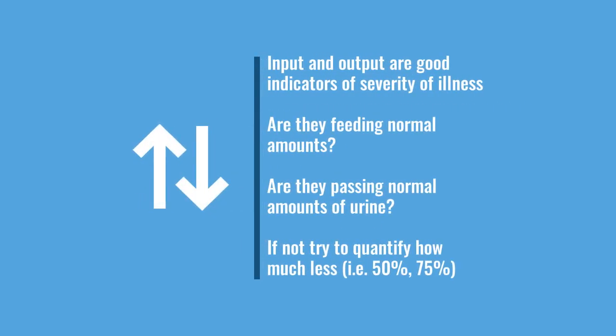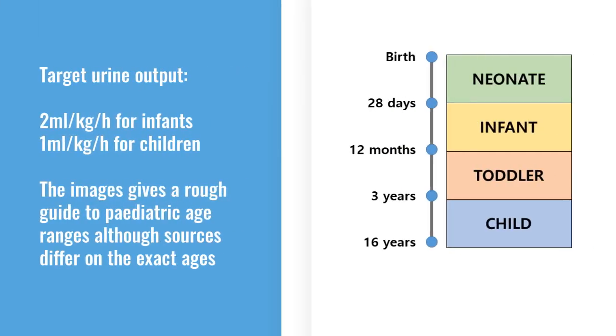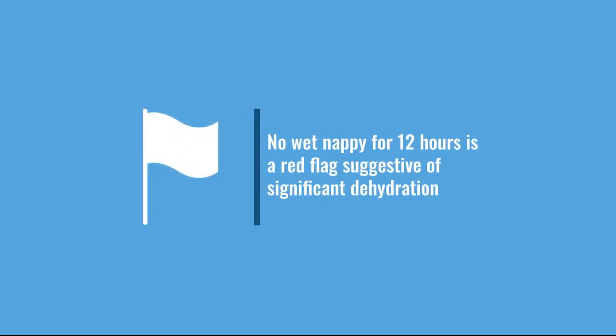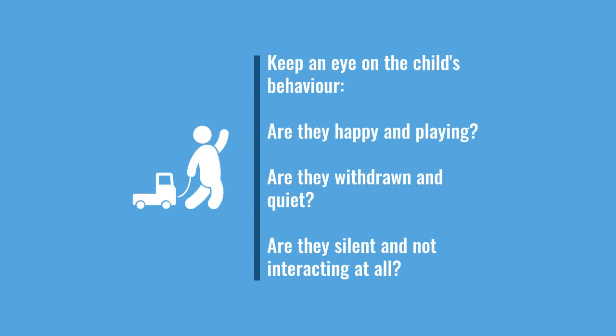It's really important to look at their input and output — are they feeding and are they toileting? For example, if they've been having wet nappies: in infants you want an output of about 2 mls per kilogram per hour, or in older children 1 ml per kg per hour. Anything less indicates inadequate renal perfusion. If a child hasn't had a wet nappy for 12 hours, that's a real red flag.